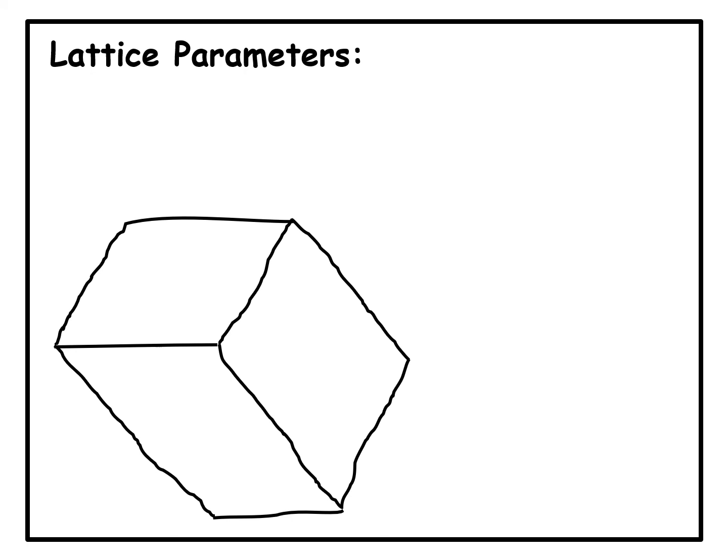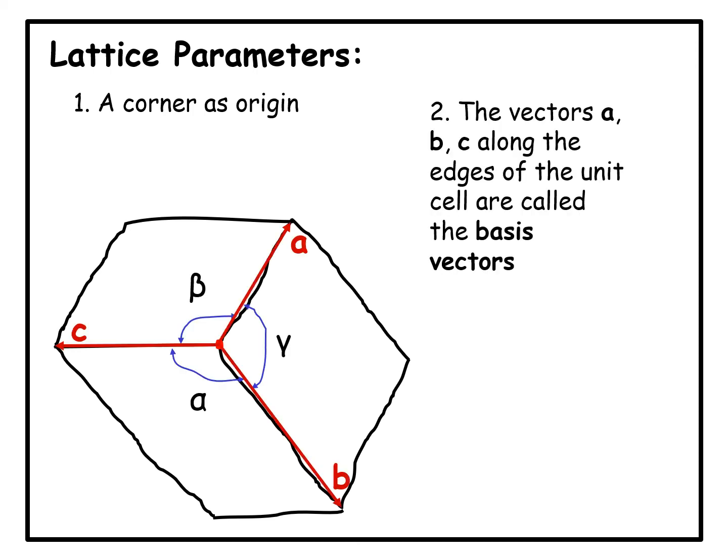Now we come to the final concept to be discussed in this video and that is of lattice parameters. We have a lattice and for the lattice we identified a parallel piped which was unit cell. Now, the parallel piped itself can be described by certain lattice parameters.